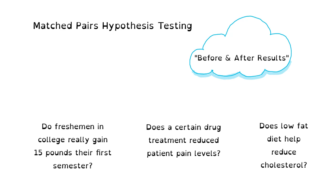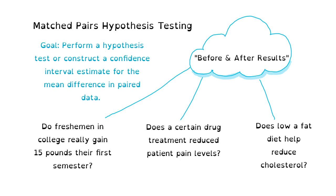We're going to talk about matched pairs hypothesis testing. What you need to think of here is before and after results. For example, we could ask: do freshmen in college really gain 15 pounds their first semester — the freshman 15 myth? Or does a certain drug treatment reduce pain levels? Or does a low-fat diet help reduce cholesterol? In each of these claims, we test them by analyzing the average difference between each before and after data value. Each before and after pair is matched because they belong to one person or subject. Our goal is to perform a hypothesis test or construct a confidence interval for the mean difference in paired data.